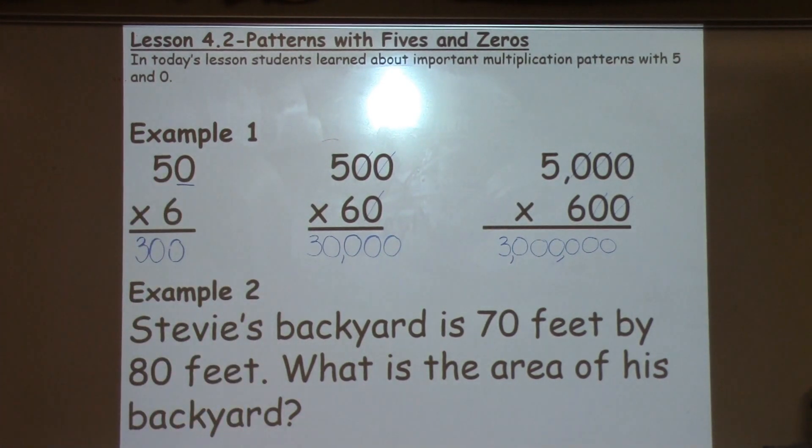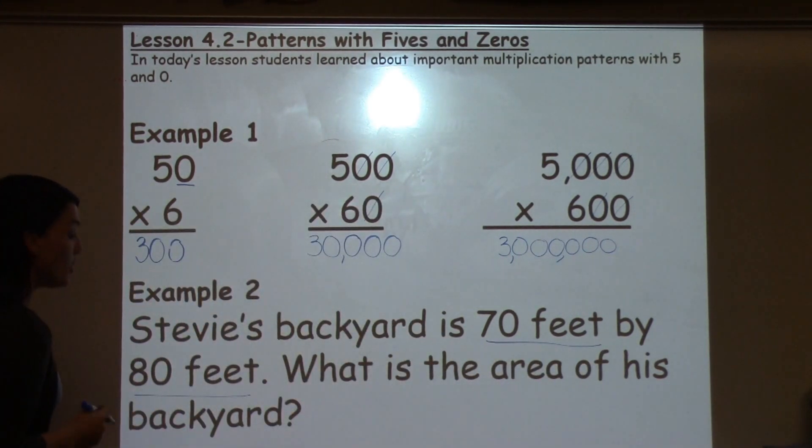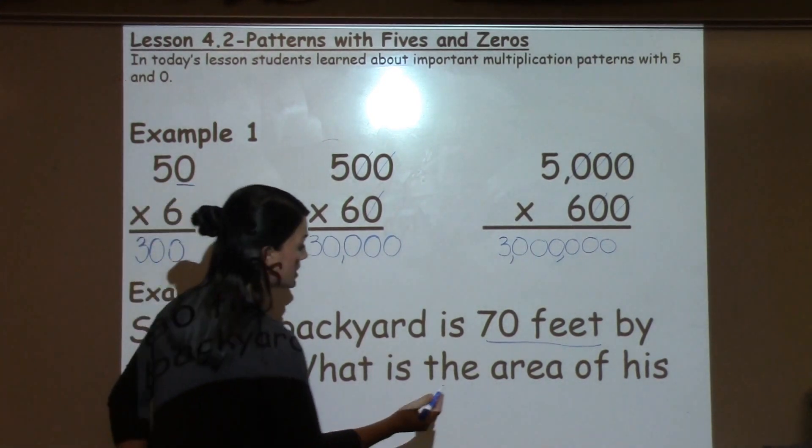Let's take a look at example 2. It says, Stevie's backyard is 70 feet by 80 feet. So I've got 70 feet and 80 feet. What is the area of his backyard?